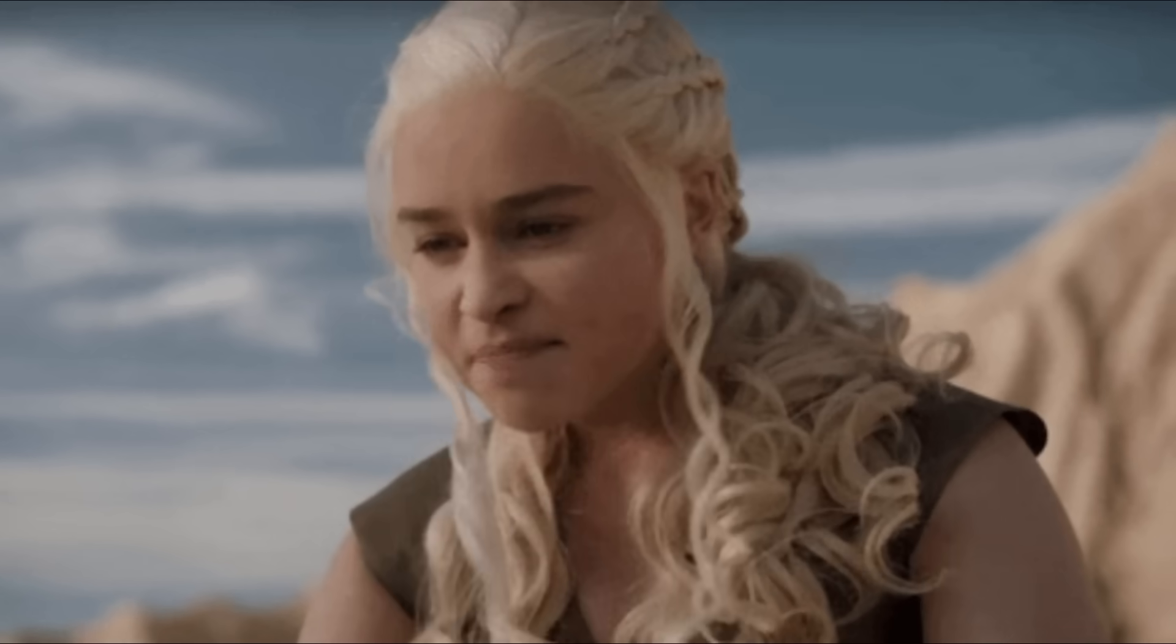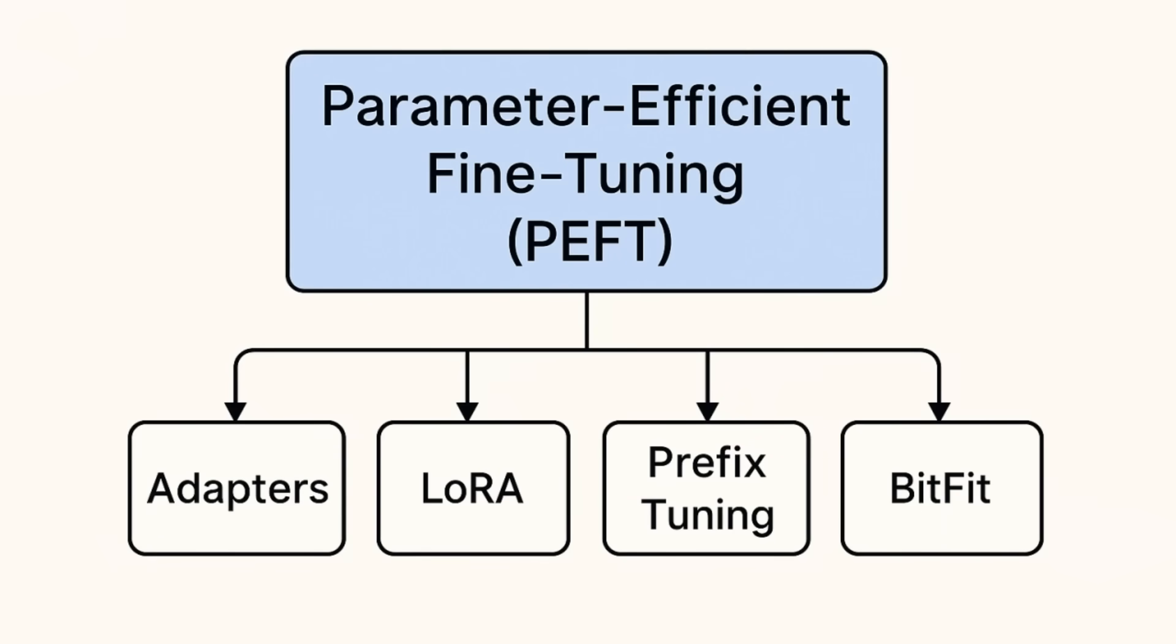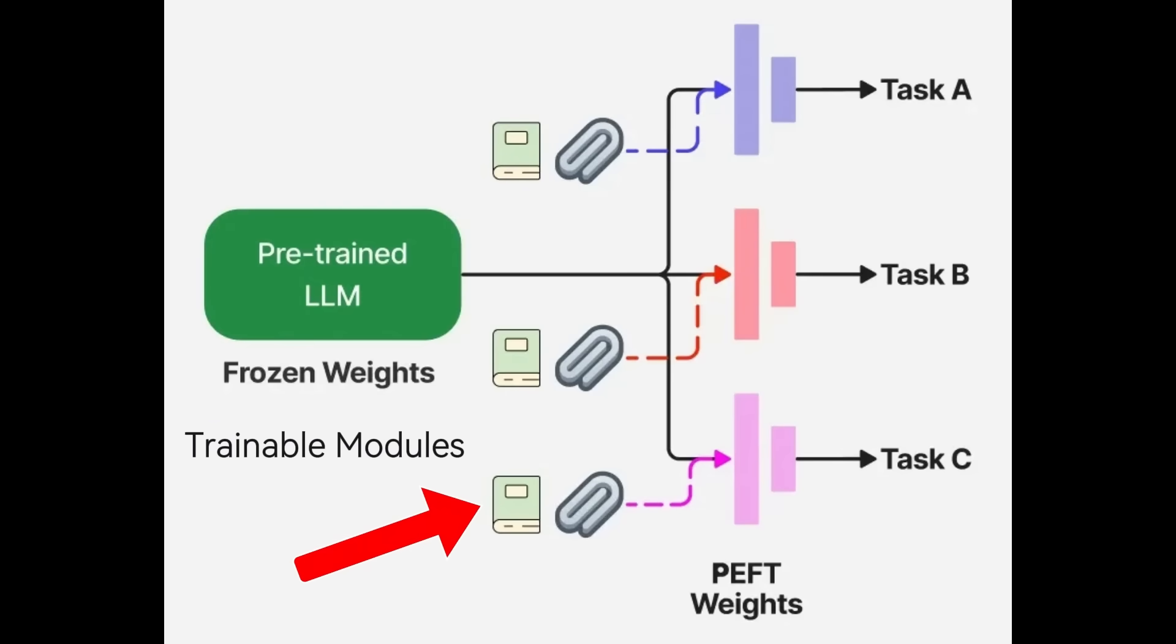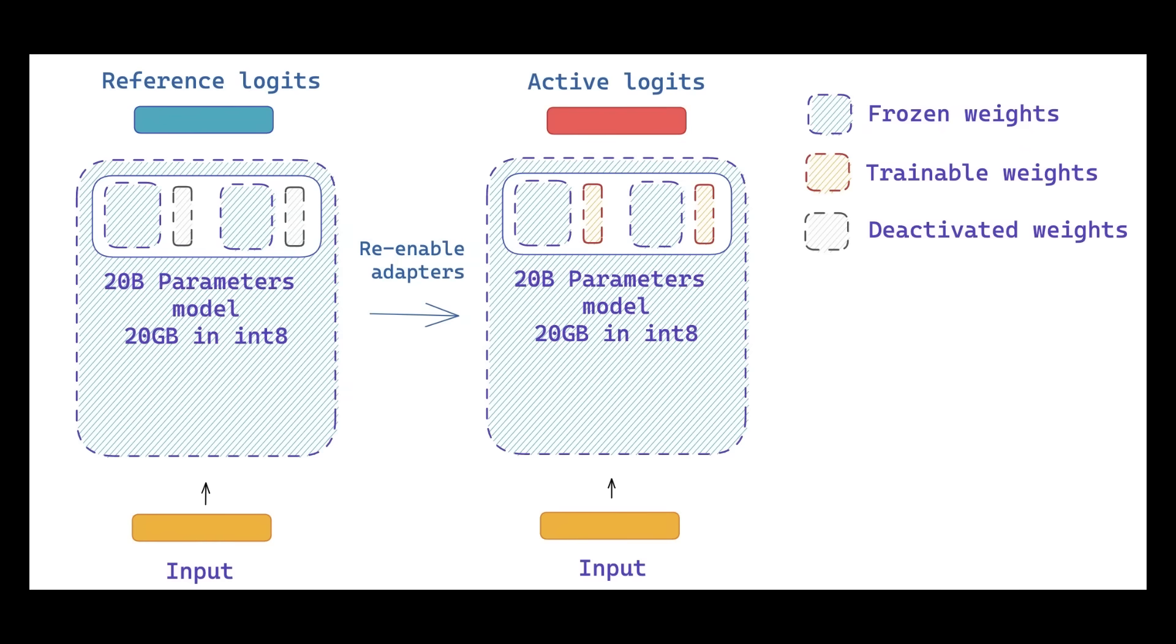Let's talk about parameter-efficient fine-tuning or PEFT. Instead of modifying all parameters, PEFT techniques update a small fraction of weights or parameters or add lightweight trainable modules. This keeps most of the model frozen, reducing memory usage and speeding up training, while still adapting the model effectively. This reduction in compute cost does not come at the cost of the pre-trained model's knowledge.